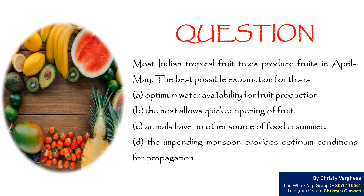A. Optimum water availability for fruit production. B. The heat allows quicker ripening of fruits. C. Animals have no other source of food in summer. D. The impending monsoon provides optimal conditions for propagation.